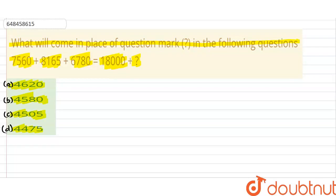So to solve the question mark, first is 7560 plus 8165 plus 6780 is equal to 18000 plus question mark. ٹھیک ہے، تو سب سے پہلے left hand side کو add کر دیتے ہیں، سارے ہمارے پاس plus کی value ہے. تو add کریں گے تو کتنا آجائے گا 22505.